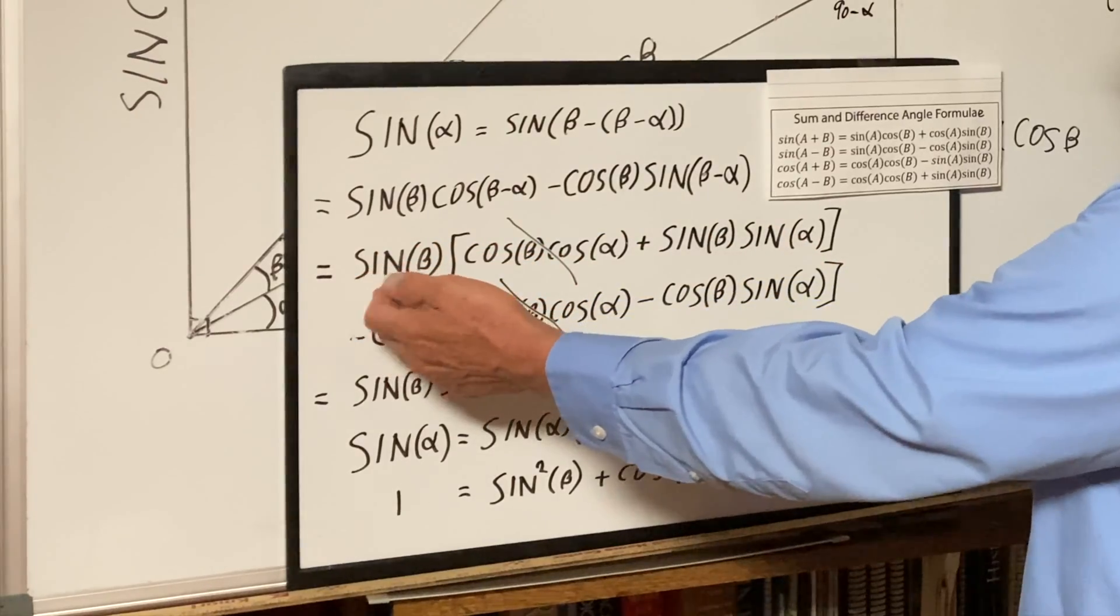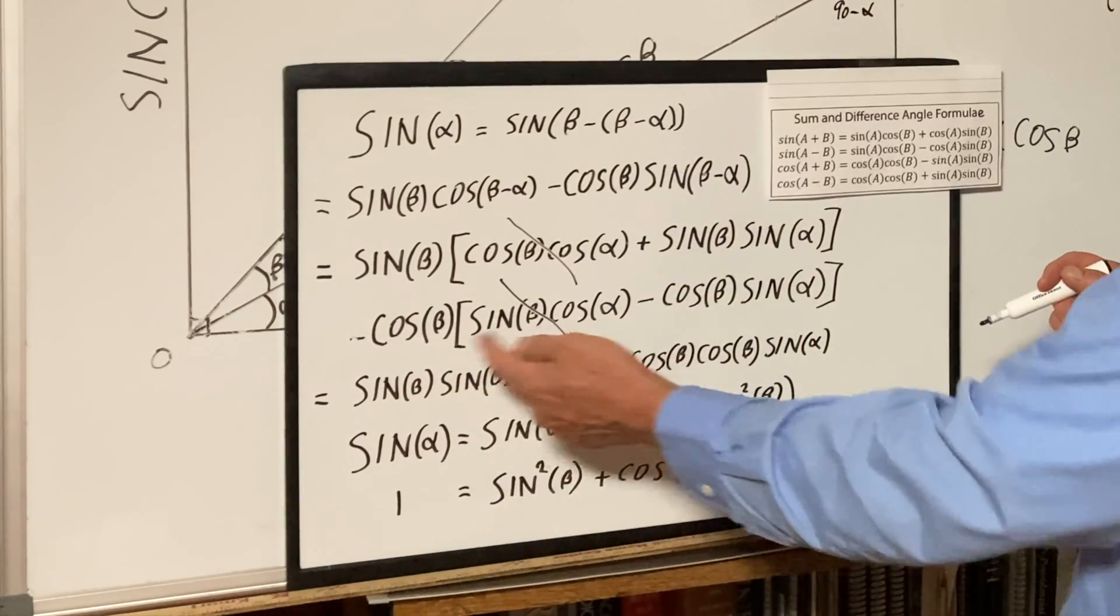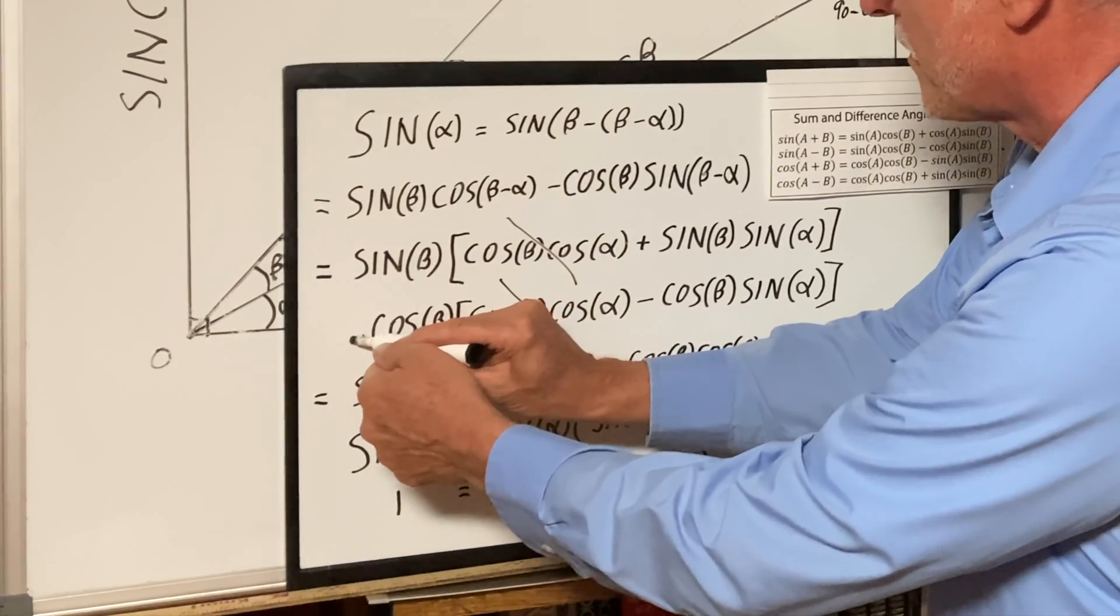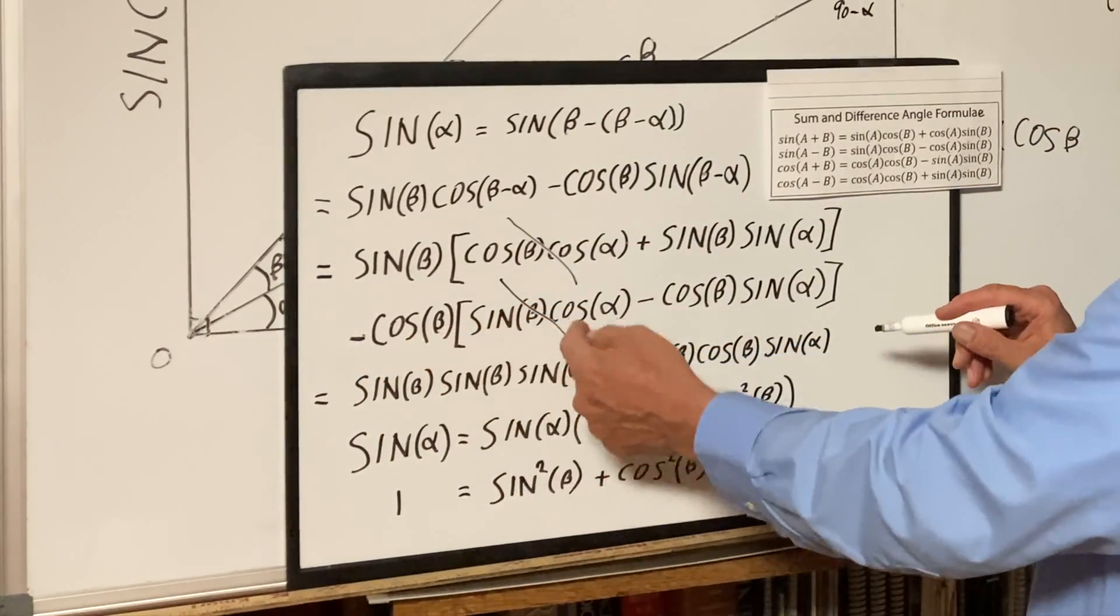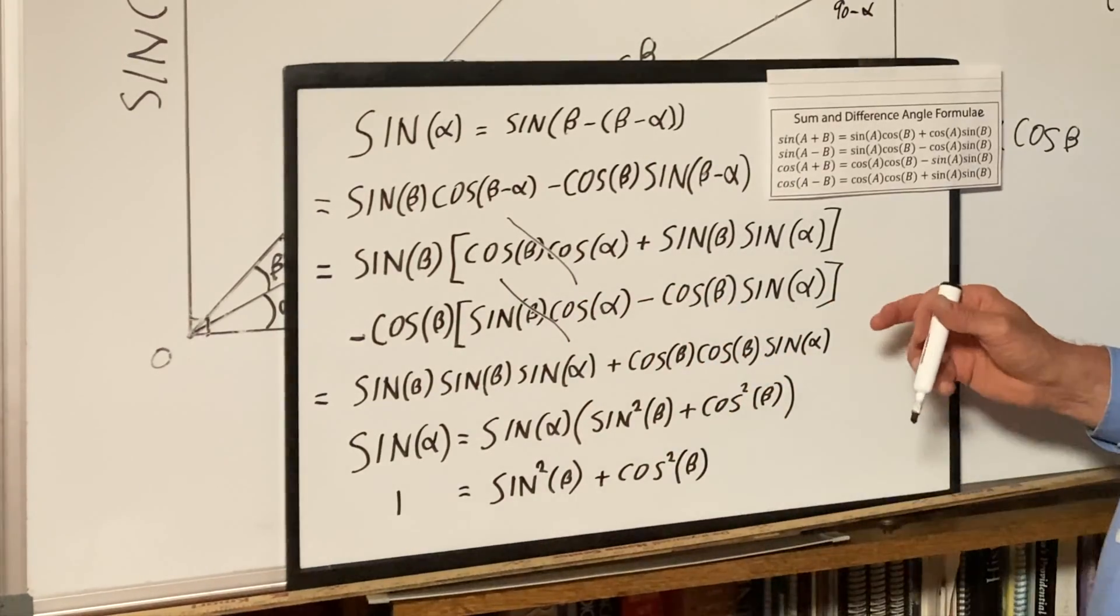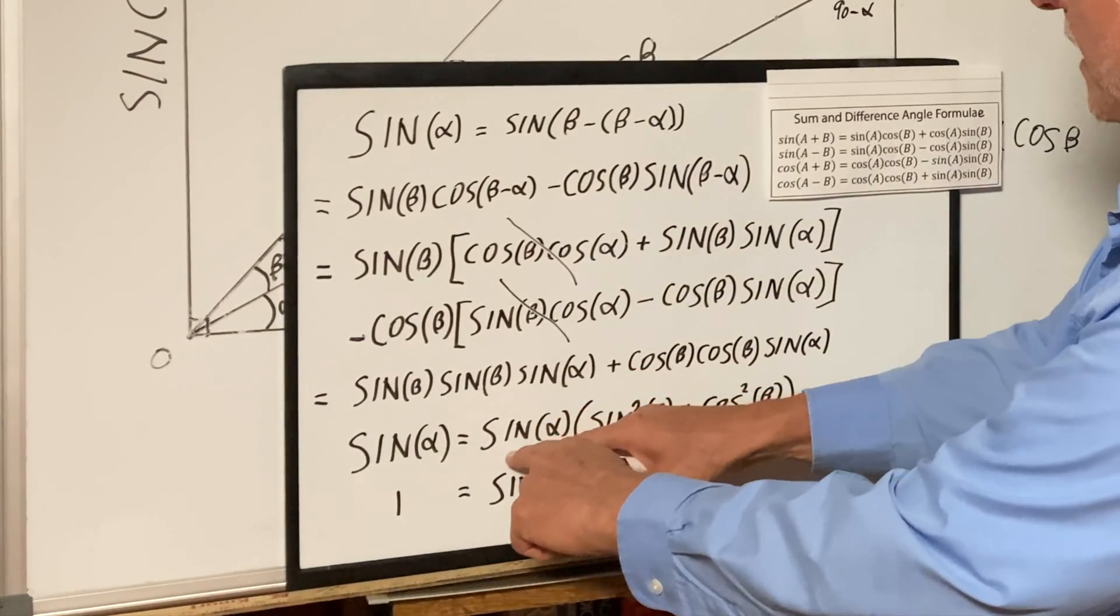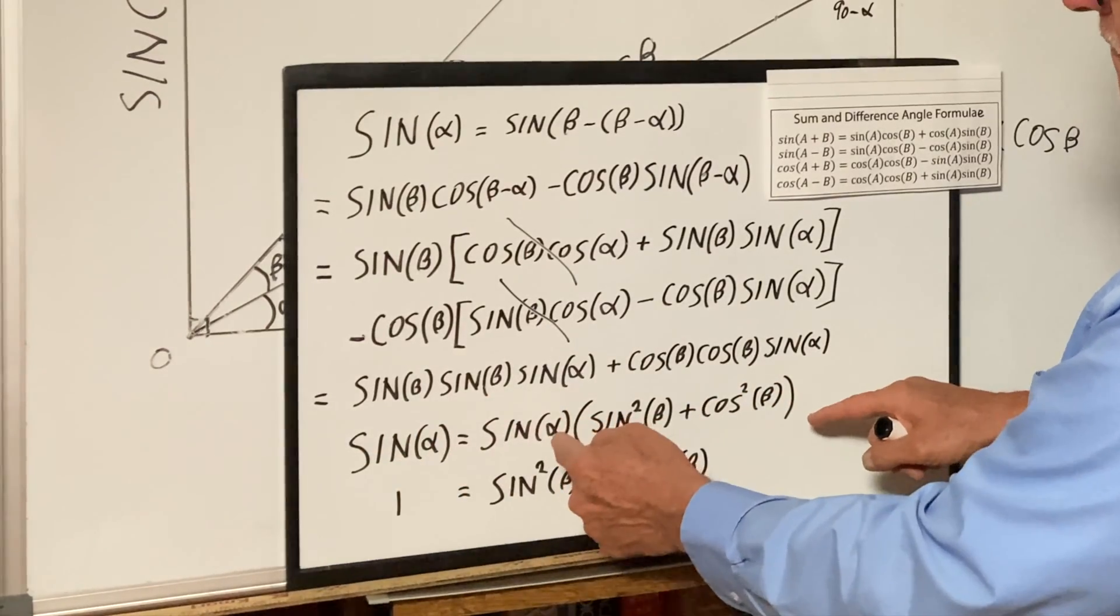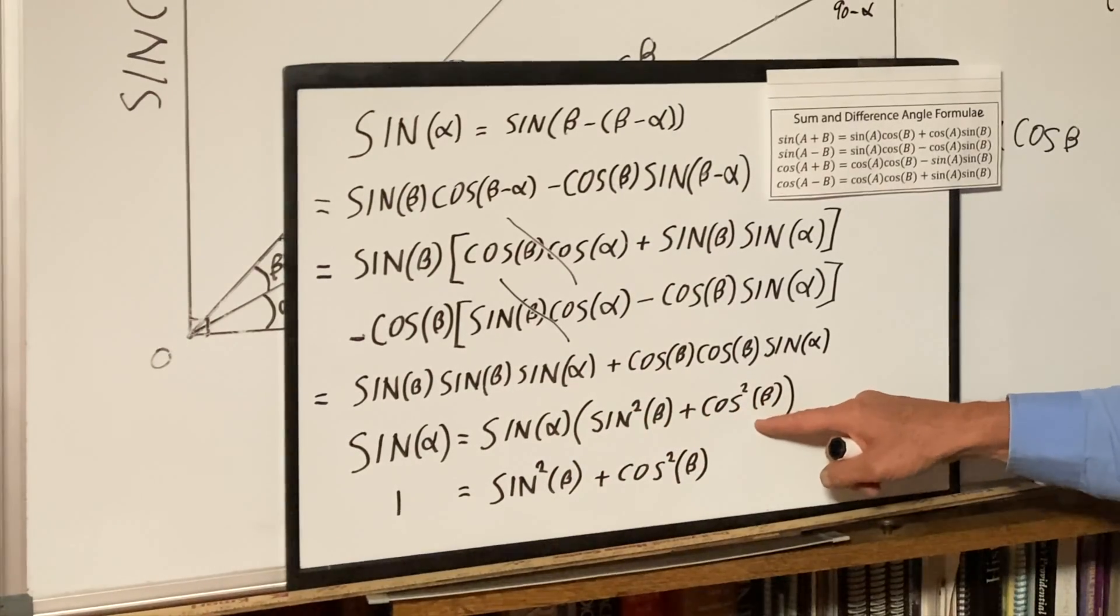And what we get is sine beta sine alpha, and then the minus and a minus makes a plus, so that's cosine beta sine alpha. Now factor out the sine alpha out of these two, and what you get is sine alpha times parenthesis sine squared beta plus cosine squared beta.